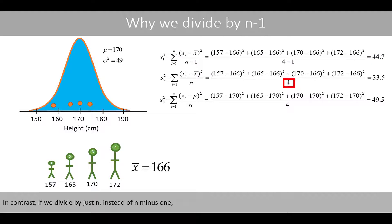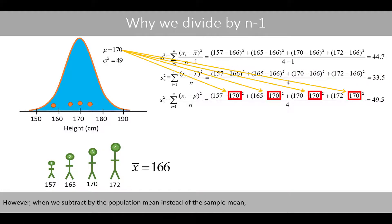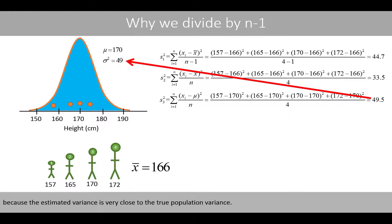In contrast, if we divide by just n instead of n minus 1, the estimated variance is much lower than the true population variance. However, when we use the population mean instead of the sample mean, it seems okay to divide by n, because the estimated variance is very close to the true population variance.